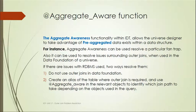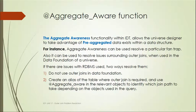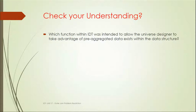There are two ways to resolve outer join issues in the RDBMS. The first is: do not use outer joins in the data foundation — if they are not particularly needed, avoid them; this is the best way to avoid outer join problems. The second is: create an alias of the table where the outer join is required, and use aggregate awareness in the relevant objects to identify which version path to take depending on the objects within the query.